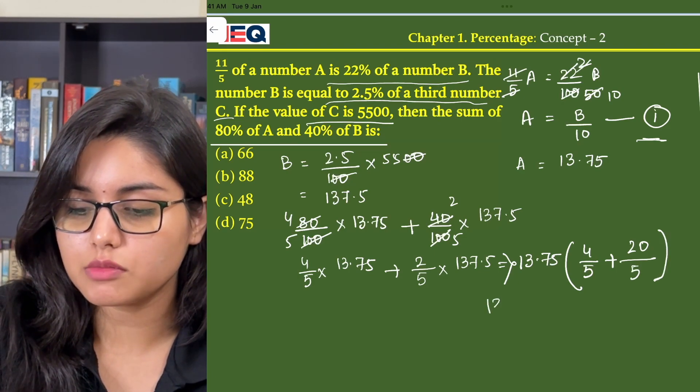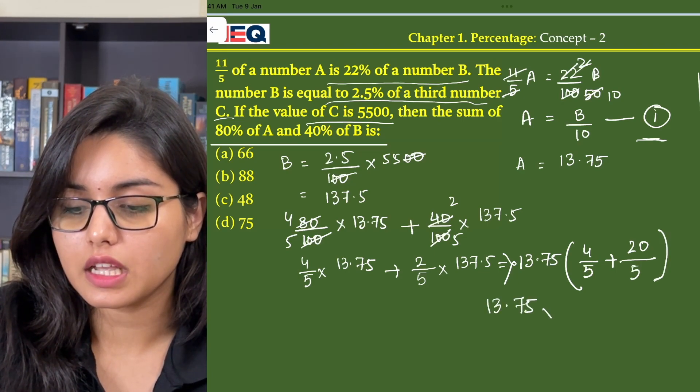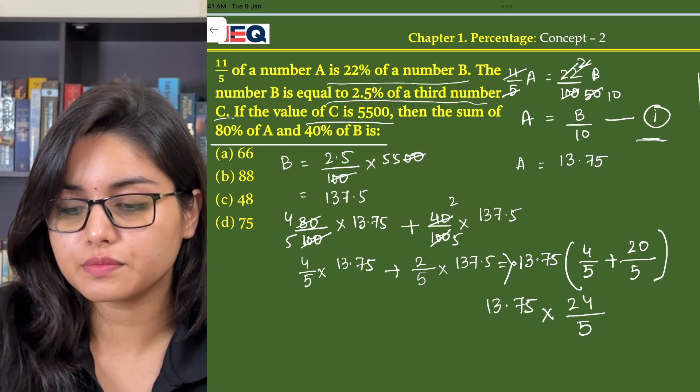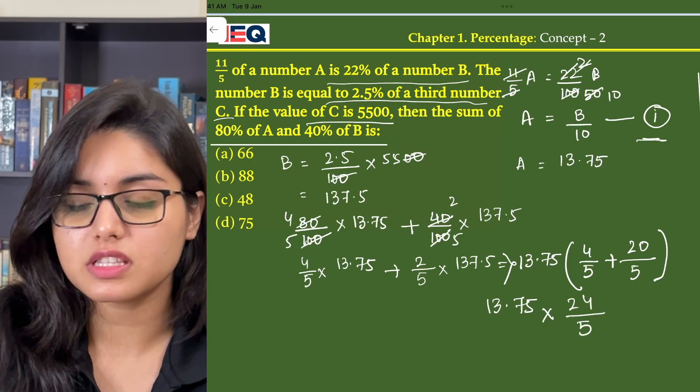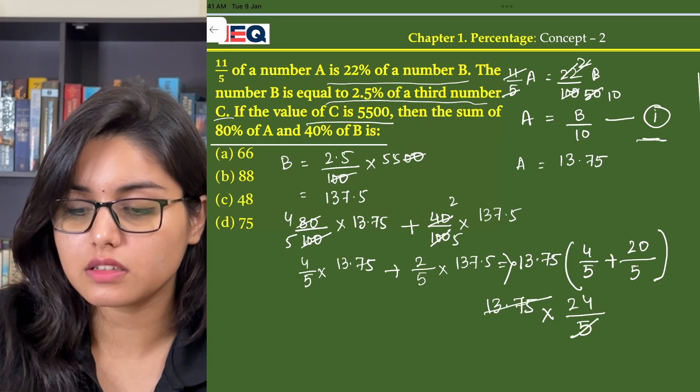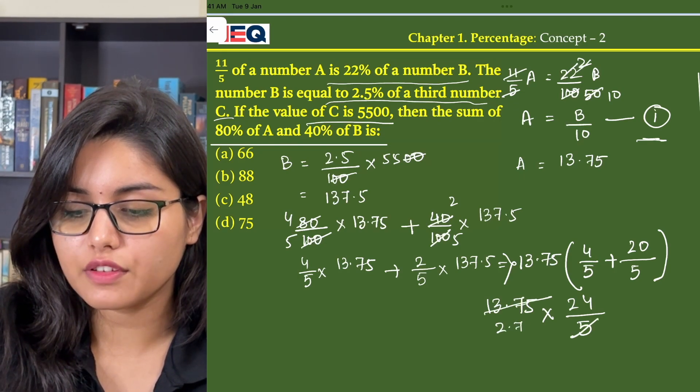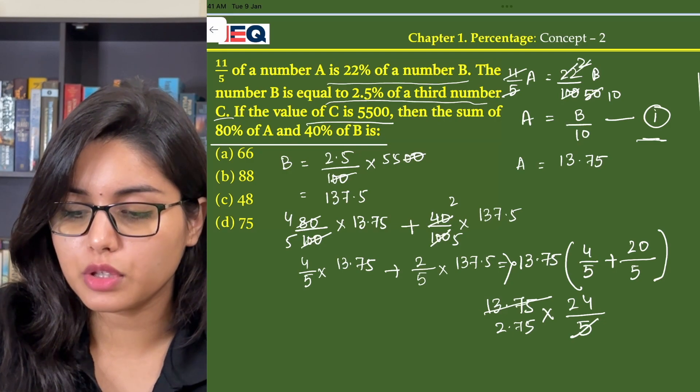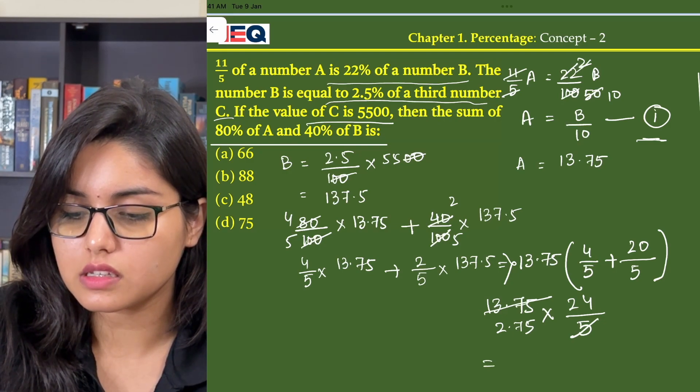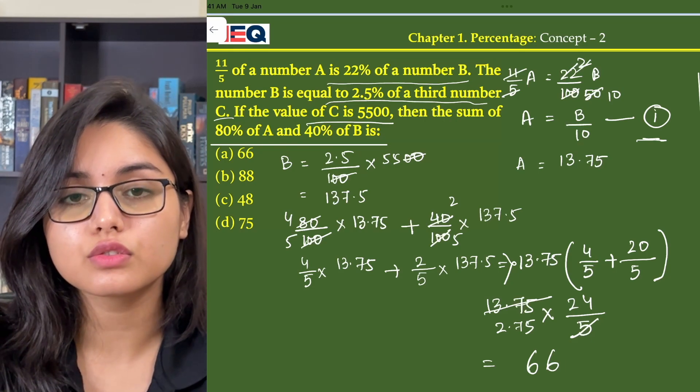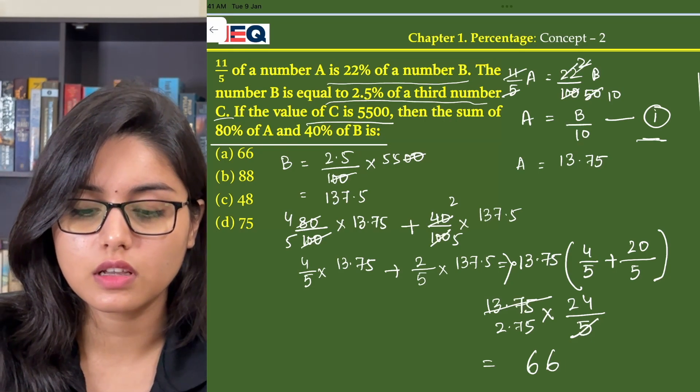So 13.75 into 24 by 5. Now on dividing 13.75 by 5 we get 2.75 and from here the answer is 66. So the answer to this question is option A.